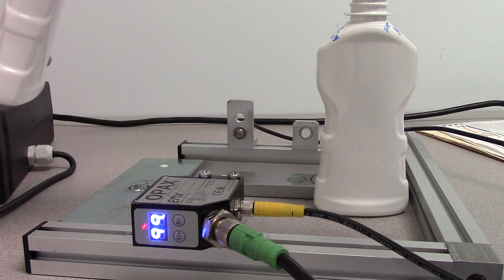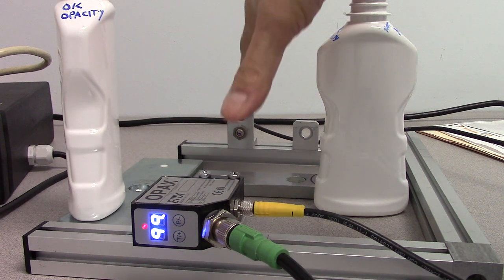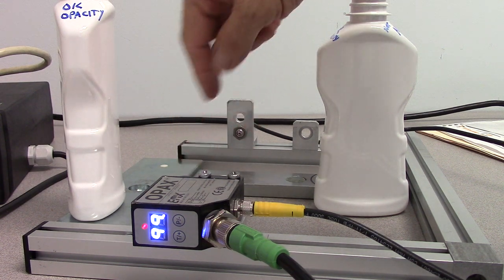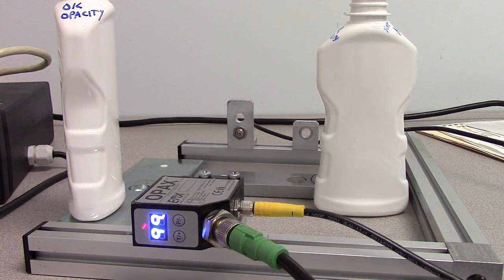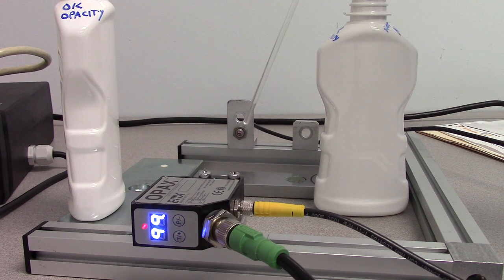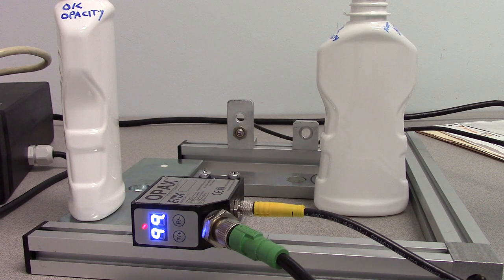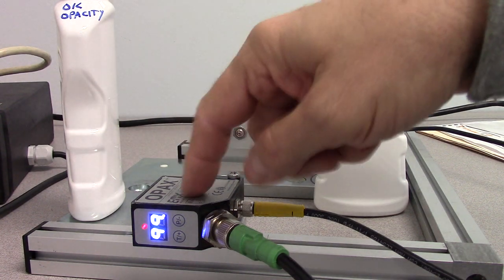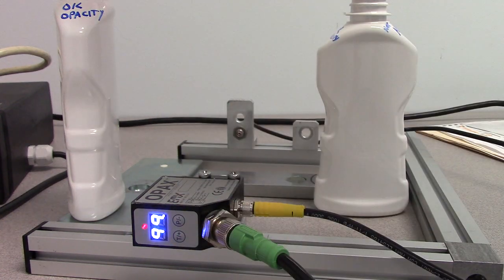Right now we have the sensor set at about 150 millimeters between the transmitter and the receiver. The transmitter in this case is the high power infrared transmitter, the OPAX 1000-THP. As the light is transmitted, we get a relative signal level on the display.